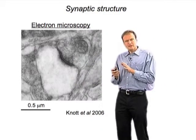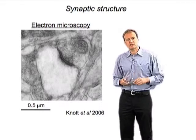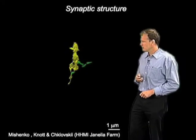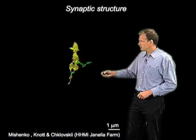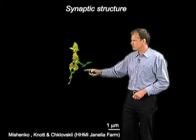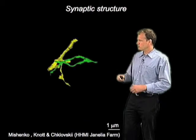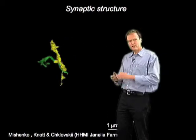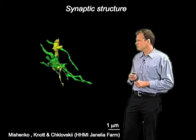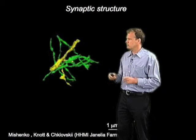From these electron microscopy images — individual images of individual 50-nanometer sections — you can build up a 3D picture of how these synapses look. Here is an example: in green is the axon, and in yellow, a 5-micron-length dendritic segment with one dendritic spine. From this 3D reconstruction, you can see that along the dendrite, synapses are packed rather tightly — about one to two synapses per micrometer of dendrite in these pyramidal cells.